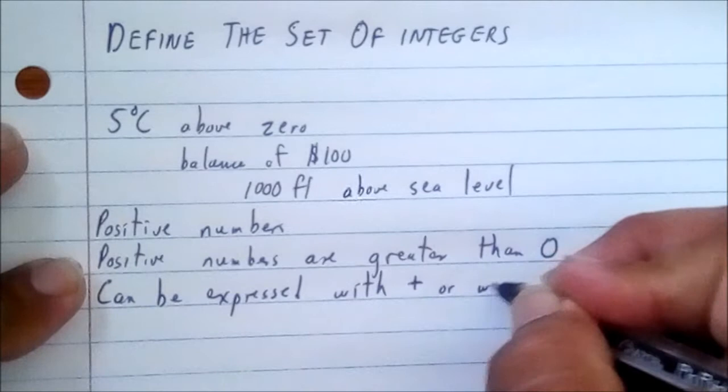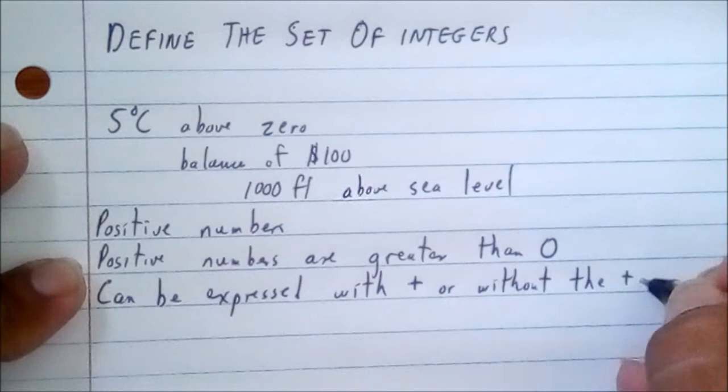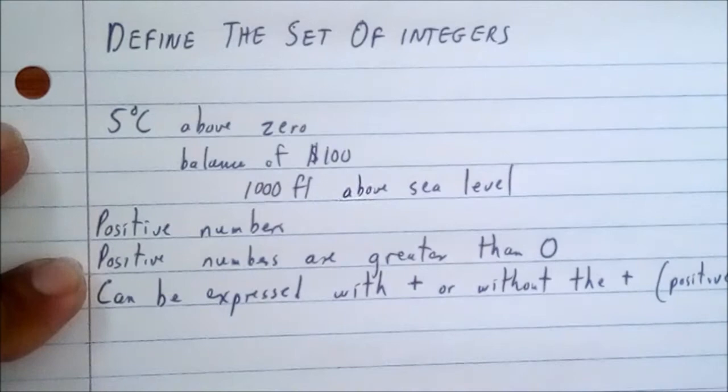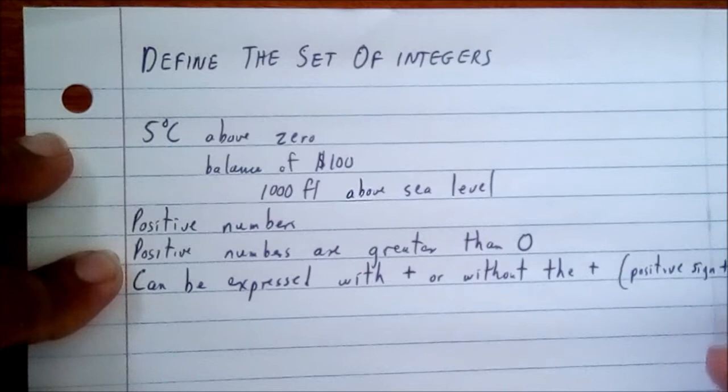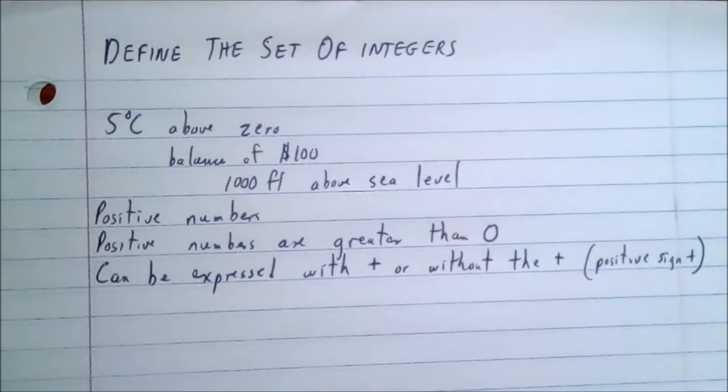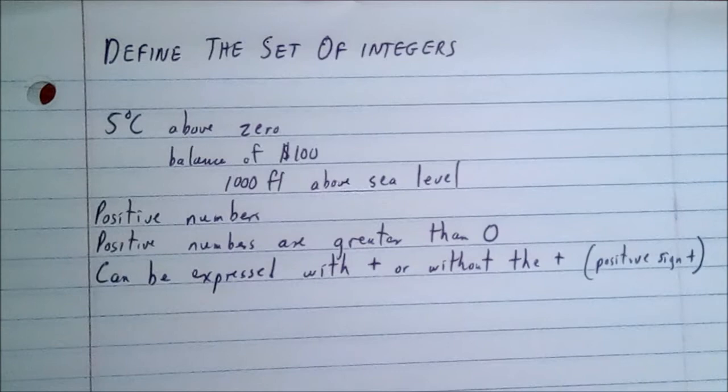Positive numbers can be expressed with or without the positive sign. So as long as it is positive — positive numbers are greater than zero. These are all of the examples we are using. Now let's put them in words, in symbols, and how we read them.